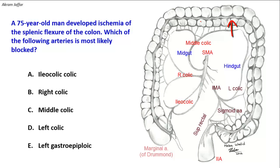This anastomosis provides important collateral circulation between the branches of the superior and inferior mesenteric arteries. The weakest link in this marginal artery is near the left colic flexure — between the middle colic and left colic branches. This is called a watershed area: a region of the body that receives dual blood supply from the distal branches of two large arteries, here being the distal branches of the superior and inferior mesenteric arteries at the splenic flexure.